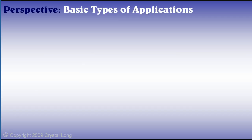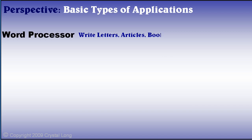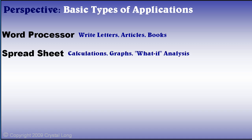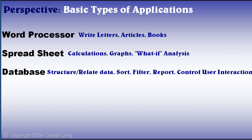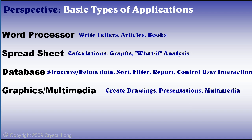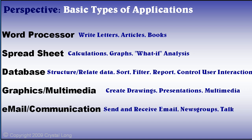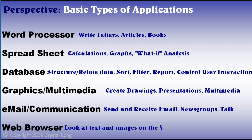In summary, let's review the basic types of applications. A word processor allows you to write letters, articles, and books. Spreadsheets are for calculations, graphs, and what-if analysis. A database is to structure and relate data, sort, filter, report, and control user interaction. Graphics and multimedia allows you to create drawings, presentations, video, audio, and all kinds of fun creative stuff. Email and communication applications let you send and receive email, participate in newsgroups, and talk to other people. And web browsers enable you to look at text and images on the web, hear audio, and watch video.